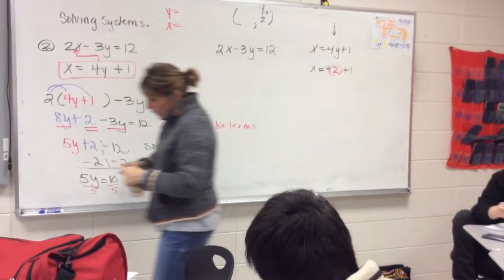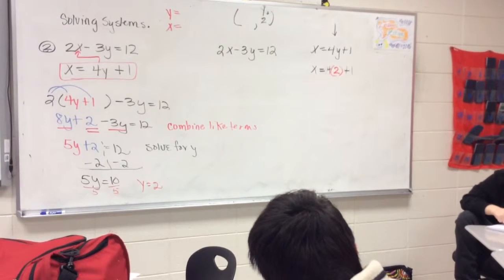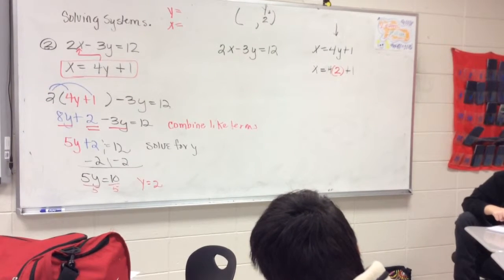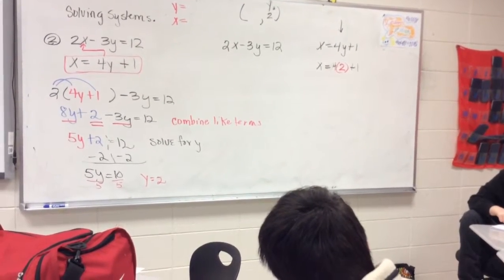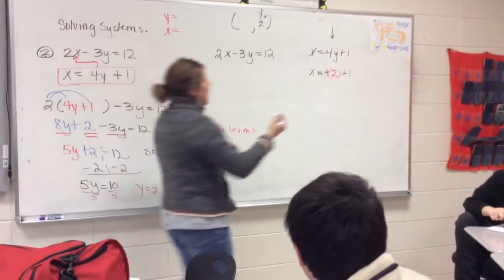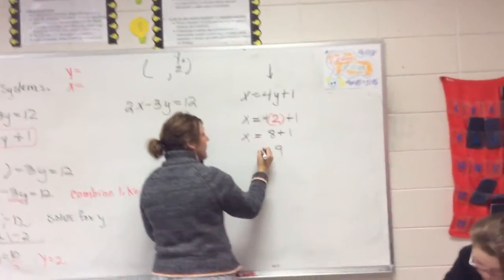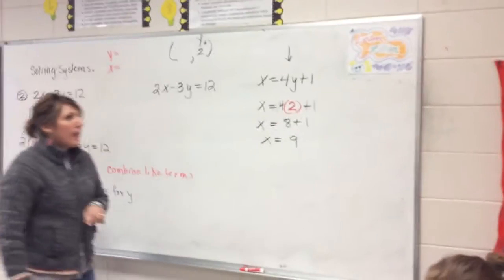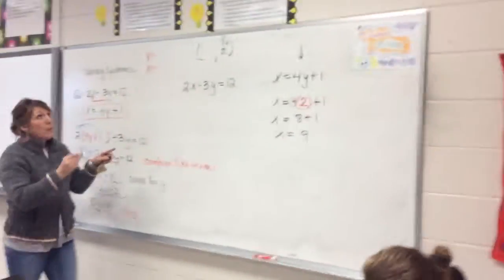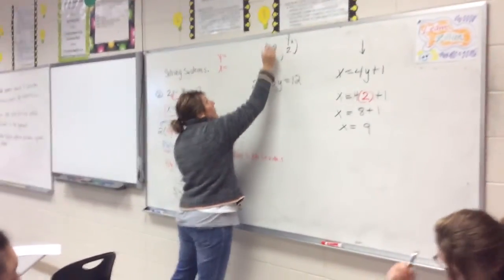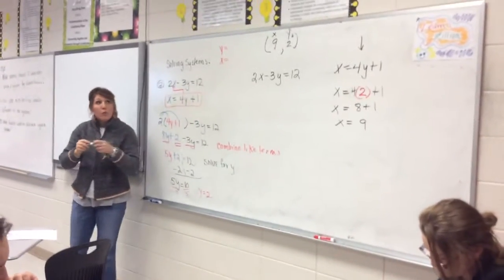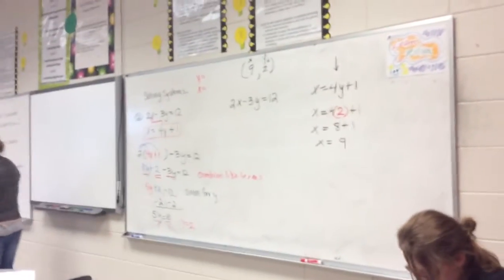Now, solving that, you get 4 times 2, which is 8. And 8 plus 1, which gives you 9. So we got 4 times 2, which is 8, plus 1, which gives you 9 as an answer. Now, if you know that x equals 9, now x equals 9 and y equals 2, tell me what are you going to do from here?